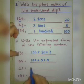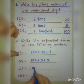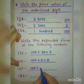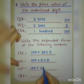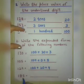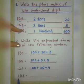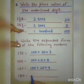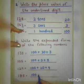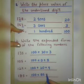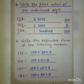Next is 129 — 1 is at 100's place so 100, 2 is at 10's place so 20, and 9 at 1's place. Last is 185 — so 185 means 100 plus 80 plus 5. Is it easy? Yes.